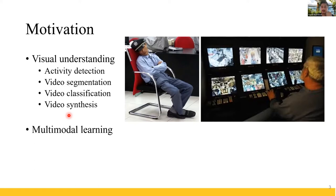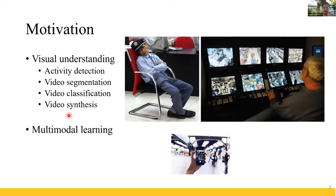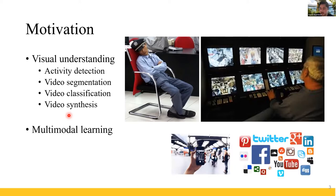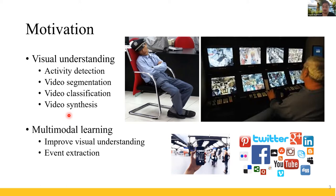Apart from visual understanding, my other focus is on multimodal learning. The motivation is that apart from CCTV cameras, we have mobile phones which capture lots of photos and videos that are shared on social media. These images and videos don't just have visual information — there is a lot of contextual information as well, such as location and information coming from different users. Can we use all of this contextual information to improve visual understanding? Some problems we can solve include event extraction from unstructured data, and we can use this kind of data for user preference learning, which can then be used for recommendation.